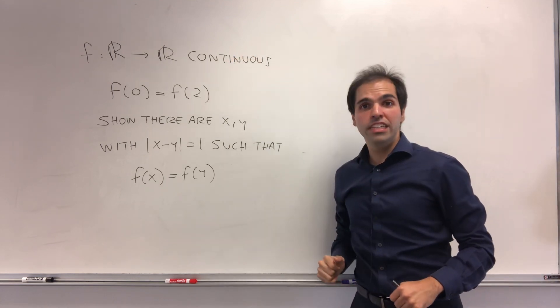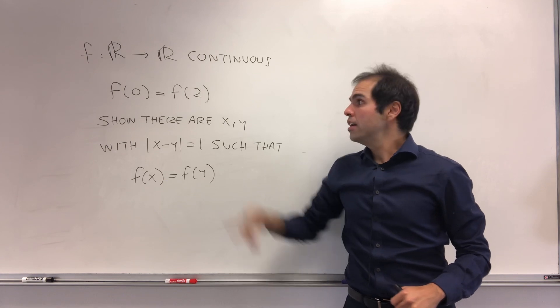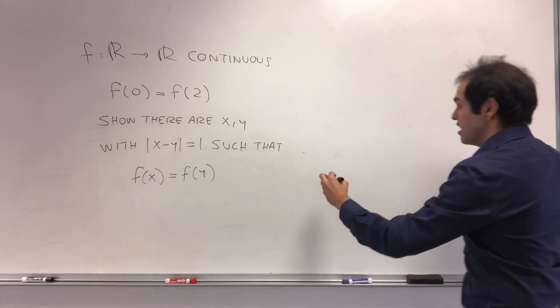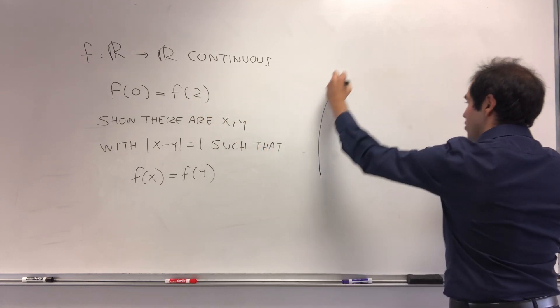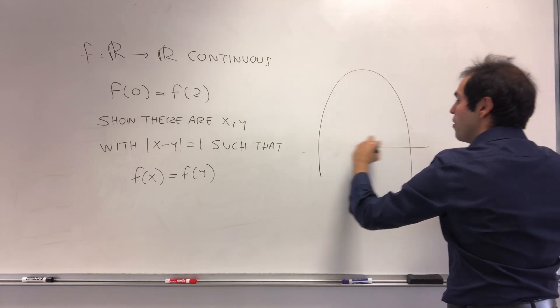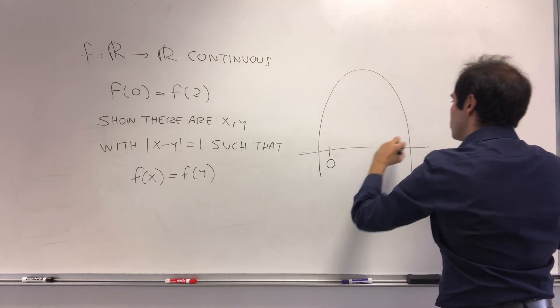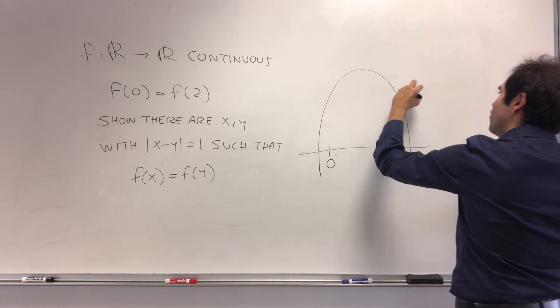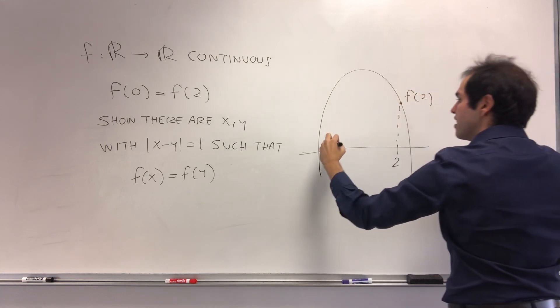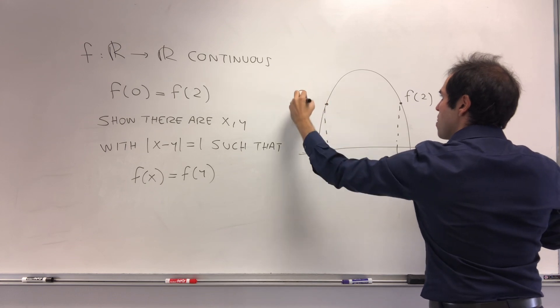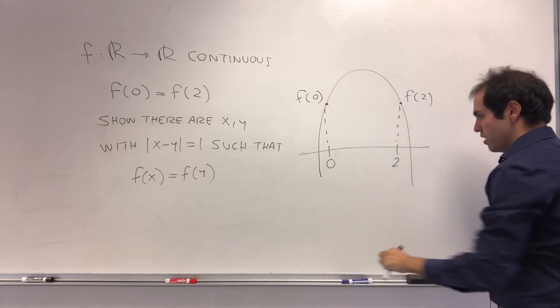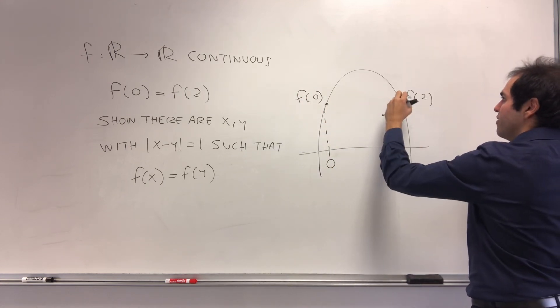Suppose you have a continuous function from R to R such that f(0) = f(2). Think of almost a parabola - this is 0, this is 2, and we know that f(2) is the same thing as f(0). So they are two apart and have the same value.